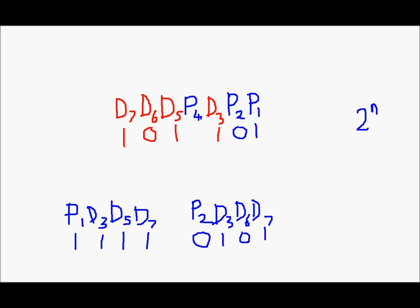Next, p4 is set in such a way that there is even parity for p4, d5, d6, and d7. d5 is 1, d6 is 0, and d7 is 1. So p4 will have to be 0 for even parity. So p4 is 0.